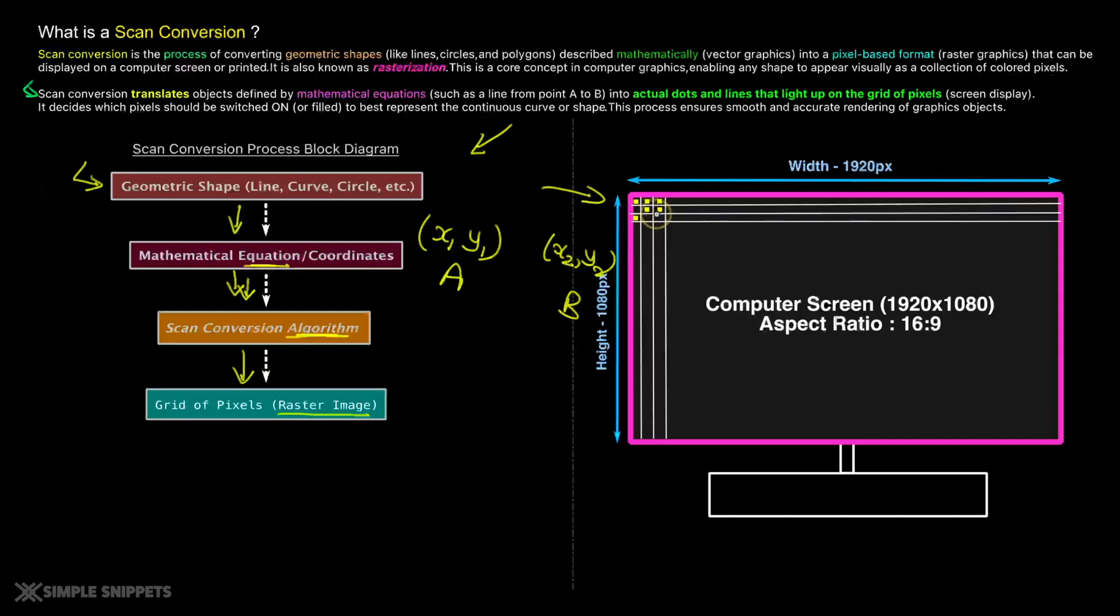So each pixel is actually a physical semiconductor on the screen that can light up individually that has its own individual intensity, its own color. This is something that as I have already said, we've already discussed. But each of this individual pixel can have its own intensity, can have its own color. And scan conversion algorithm basically takes these mathematical equations and converts them in such a way that they can be plotted on the screen and light up certain set of pixels to show you a particular image.